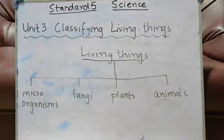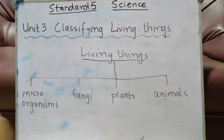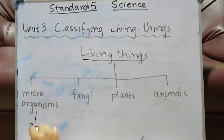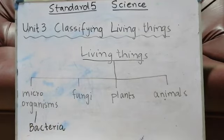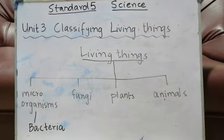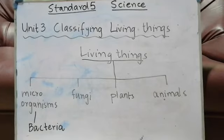Within the microorganism category, the biggest group is bacteria. Bacteria are microorganisms found practically everywhere — there are even around 20 types of bacteria living on your skin. They can be found in soil, in water, in the air, and they have different shapes and sizes.